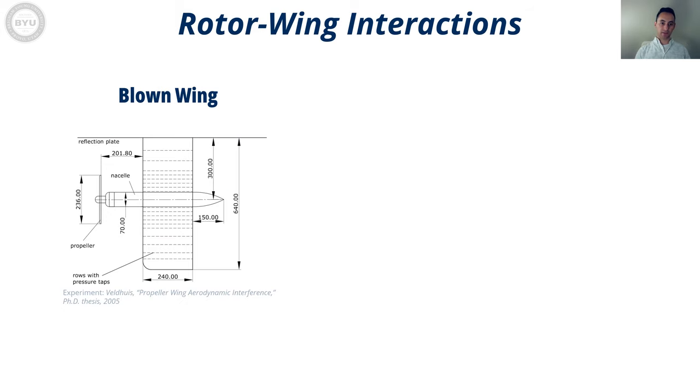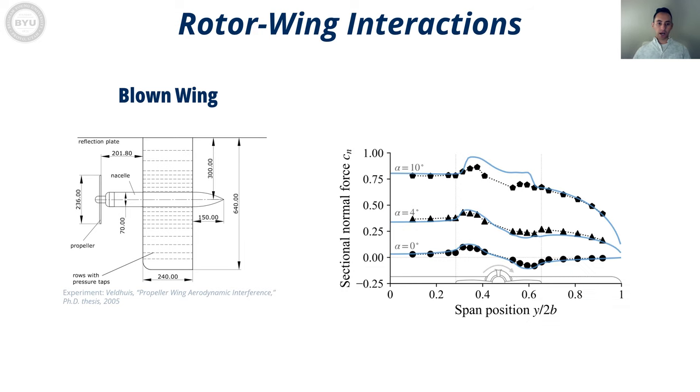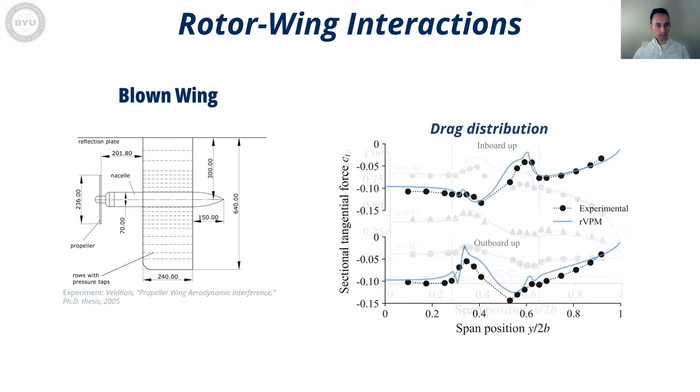Finally, we tested the case of a blown wing. We found good agreement up to moderate angles of attack, but it started to deviate from the experiment once the wing starts to stall, which is not captured in the actuator surface model. Not only were we able to predict the right lift, but also we were able to capture the right drag distribution.